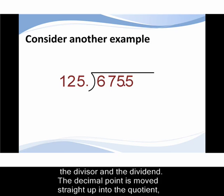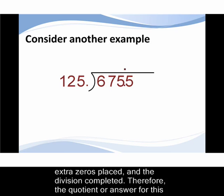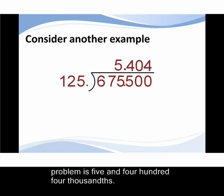The decimal point is moved straight up into the quotient, extra zeros are placed, and the division completed. Therefore the quotient or answer for this problem is 5 and 404 thousandths.